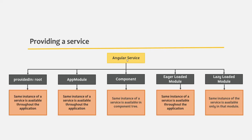We can also provide an Angular service on a component. When we provide a service on a component, the same instance of that service is available in that component and its child components and their child components. That instance will not be available in any other component — other components will have a different instance. Only that component where we are providing that service will get an instance, and the same instance will be passed to its child components and their child components, unless we are overriding that instance in the child components.